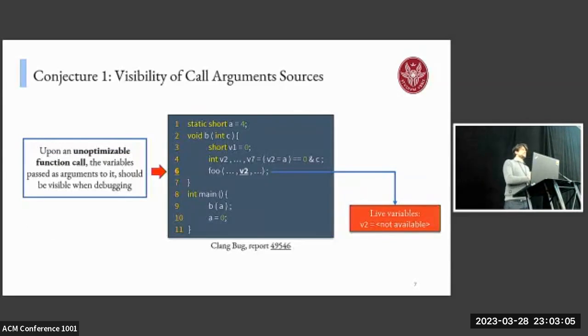The first conjecture is based on the availability of call arguments. It states that upon an unoptimizable function call, all the variables that are passed as arguments to the call should be visible when debugging. To make it clear, let's consider this example from a bug confirmed in the Clang compiler. We have that at line six there is a call to a function which is defined in an external module, therefore cannot be optimized, for instance by inlining. But when stepping on it, we have that the variable V2, which is previously declared and initialized, is not available during debugging, causing a violation of the conjecture.